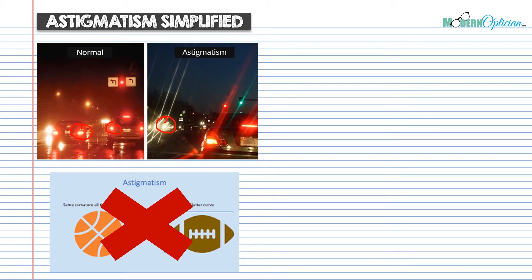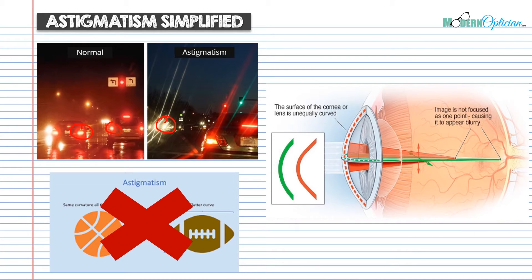I understand sometimes we use layman analogies to describe things to patients, but this isn't even accurate. The reality is the textbooks will sometimes use the football analogy, but in truth it's that the surface of the cornea or lens is unequally curved. A football is unequally curved, but the eye doesn't necessarily resemble a football, and it's the cornea — not the eye. I encourage you to focus more on the idea that there are two different planes or meridians of curvature on the cornea, as shown in red and green here. This is accurate and something you'll want to carry along in your description of astigmatism.